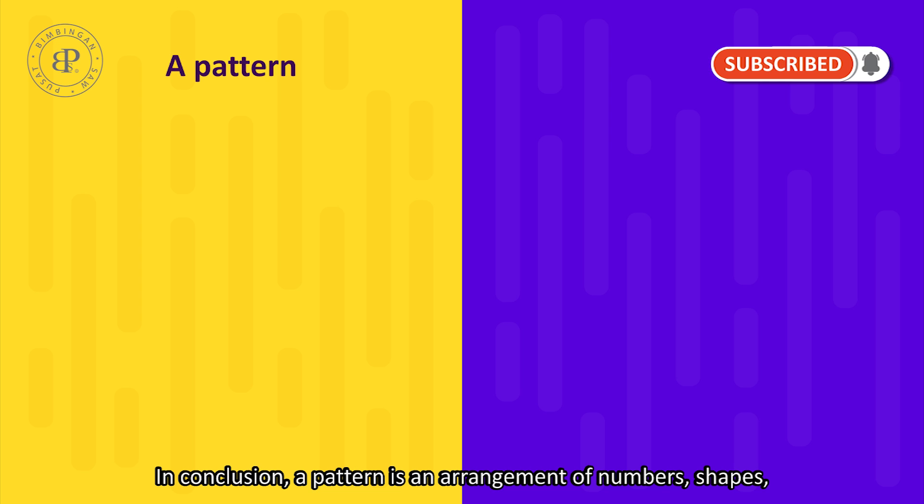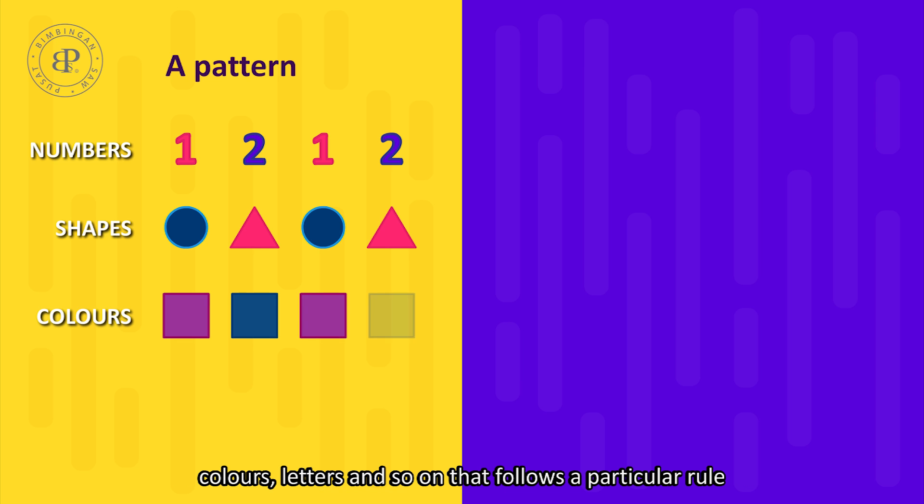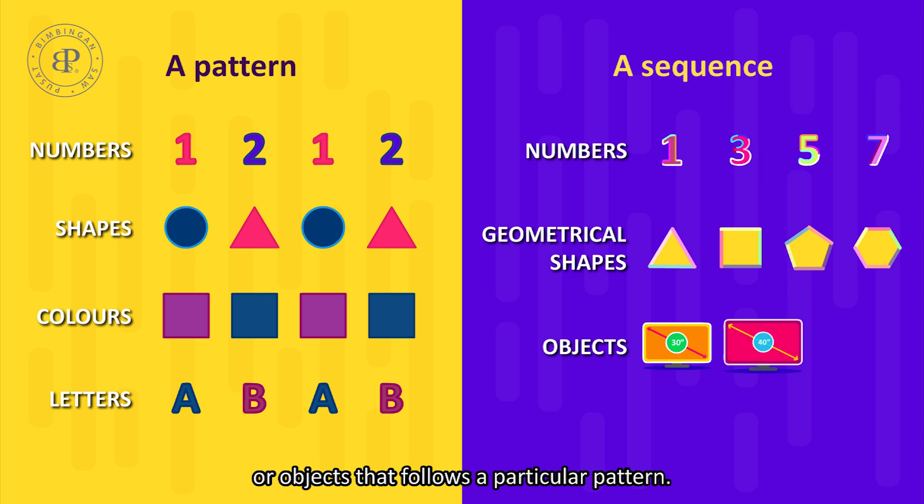In conclusion, a pattern is an arrangement of numbers, shapes, colors, letters, and so on that follows a particular rule, whereas a sequence is a list of numbers, geometrical shapes, or objects that follows a particular pattern.